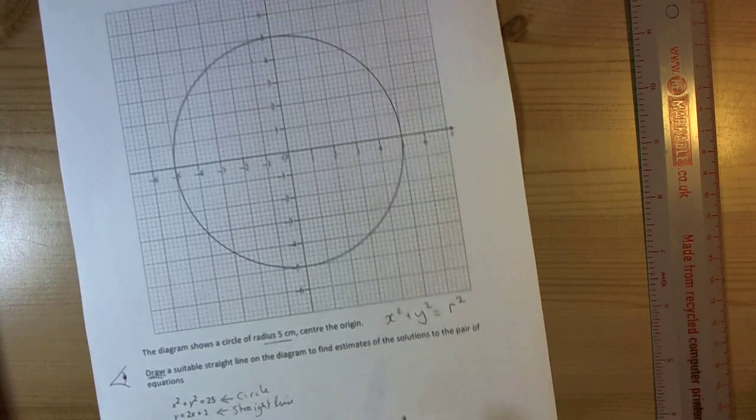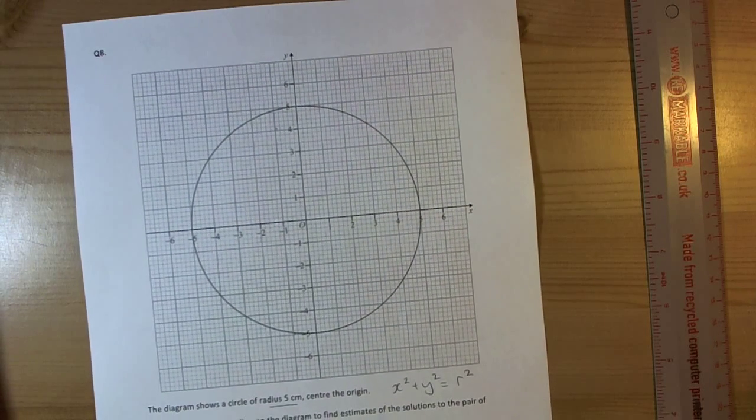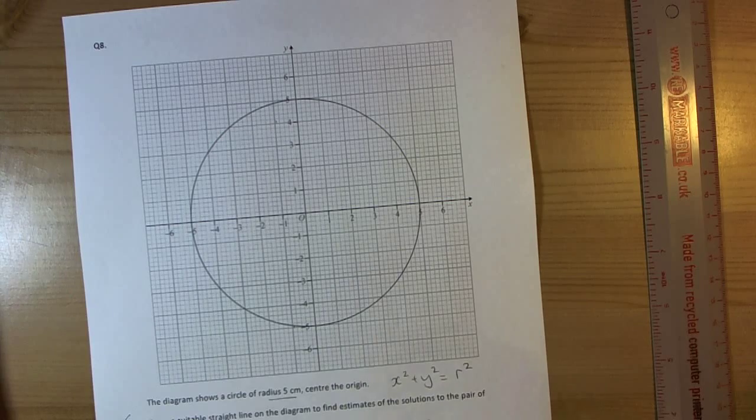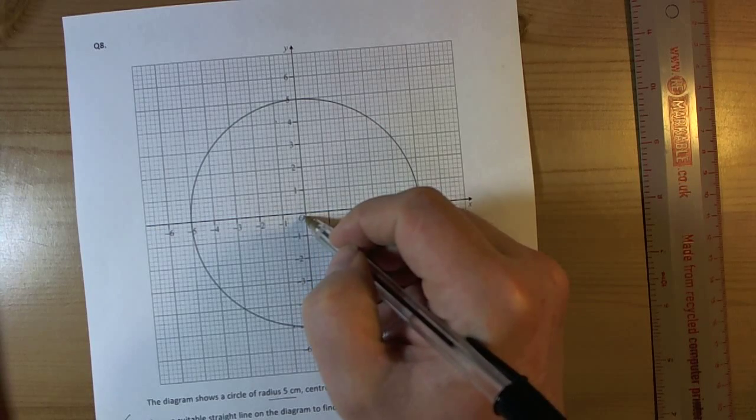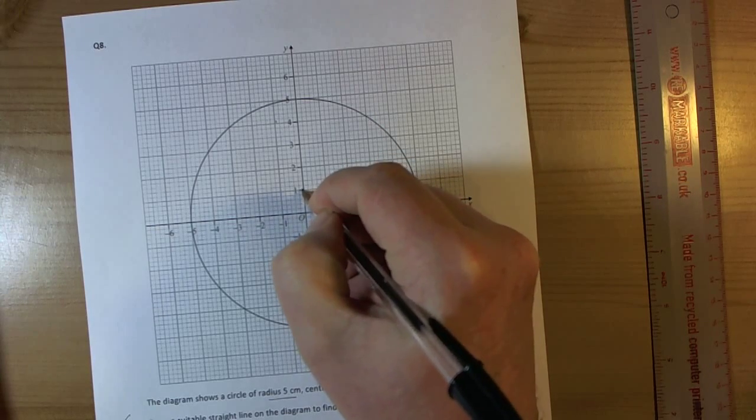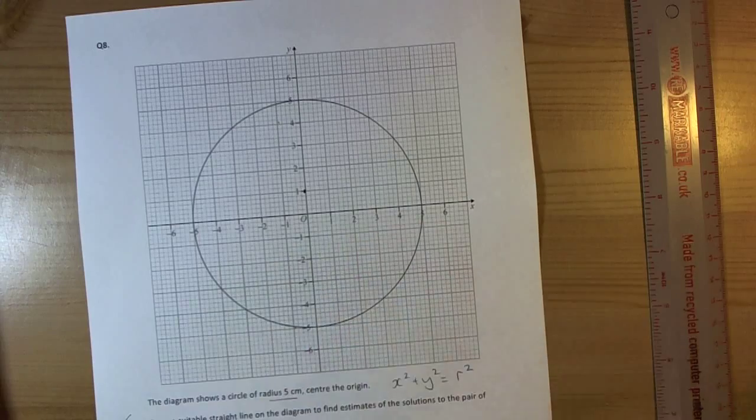So to draw y equals 2x plus 1, lots of ways of doing it. And the quick way when you've got a straight line is the c value always tells us where we cross the y axis at 0 on x. So this line is going to cross there, at the point 1.